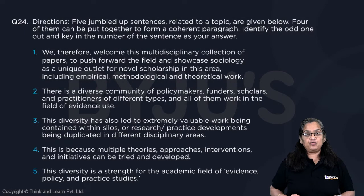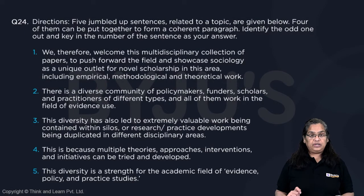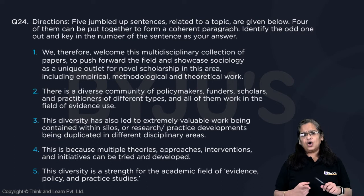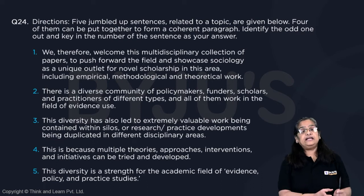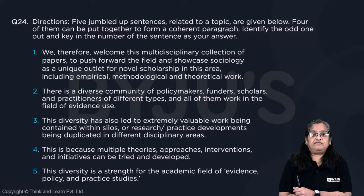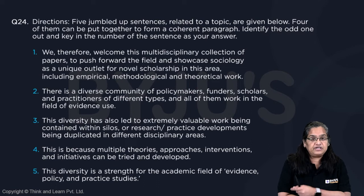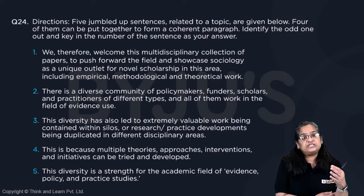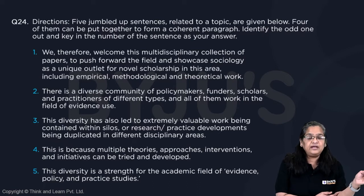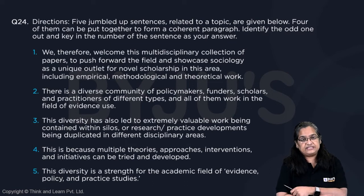Alright, we have to find an odd one out in this Para Jumble. The odd one out can be identified in terms of theme or tone — if so, it's easy to identify. If not, then you have to structure the rest of the sentences. So first we'll read the sequence of sentences as they are given and try to see if we can identify the odd one out in terms of theme and tone outright, or see if we need to organize the rest of the sentences to find out which one doesn't fit.